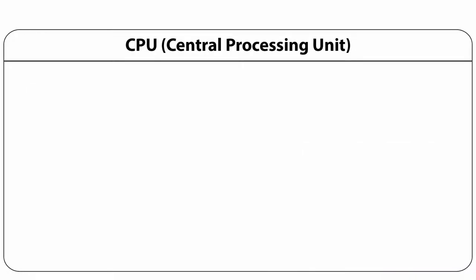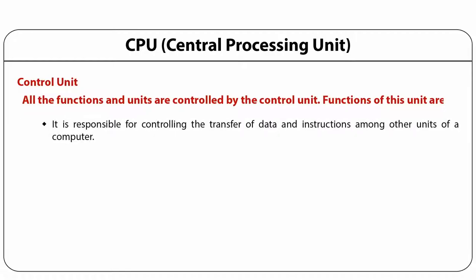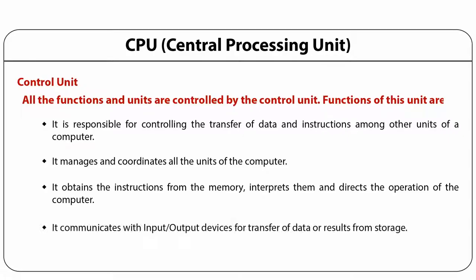The control unit controls all the functions and units as the name itself suggests. It is responsible for controlling the transfer of data and instructions among other units of the system. It manages and coordinates all the units of the computer, obtains instructions from the memory, interprets them and directs the operations of the computer. It communicates with the input and output devices for the transfer of data or results from the storage.